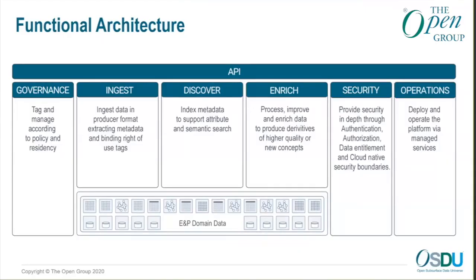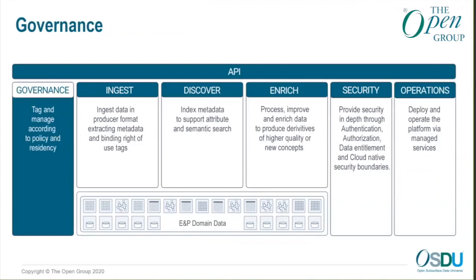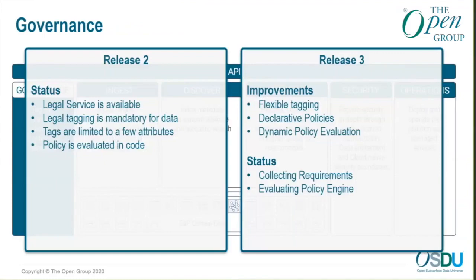Given those data and system principles, let's go back to the same picture and look at it from an API perspective for each service — where we were with Release 2 and what we're working on for Release 3. Jumping into governance first: what we've released in R2 is a legal service that helps with compliance and tagging of data — things like country of origin and other countries where the data may have been. The policy is evaluated by the legal service itself, but it's still limited to a few attributes.